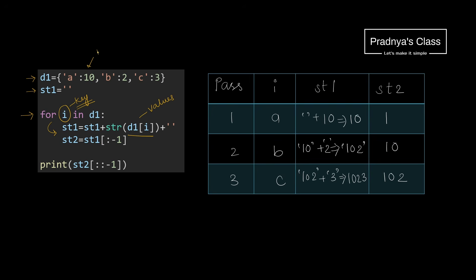Look at the values — they are of integer type. That's why using the str function, we are converting them to string, and that value will get concatenated with the previous value of the string which is initially empty. We are also concatenating an empty string at the end. With the next statement, we are creating a new string by removing the last character of the st1 string.